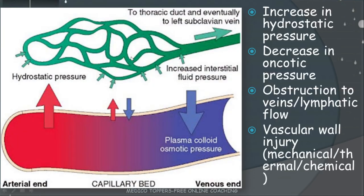The four culprits behind edema are: number one, increase in hydrostatic pressure; number two, decrease in oncotic pressure, mainly because of albumin; number three, obstruction of venous or lymphatic flow; and number four, vascular wall injury — whether mechanical, thermal, or chemical injury to the vascular wall. These are the four major mechanisms causing edema.